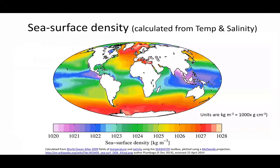Moving on to sea surface density. If we convert those salinity and temperature variations to density variations for the surface ocean, we see very high densities around Antarctica and at very high latitude in the North Atlantic and the Arctic Ocean. There are also some very high densities in the Mediterranean Sea and in the Arabian Gulf and the Red Sea. Where we're forming dense waters in these parts of the ocean, those will be the dense waters that then sink into and fill up the deep ocean — hence explaining why the deep ocean is full of colder water.